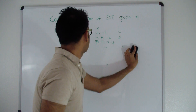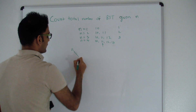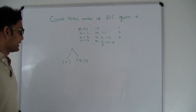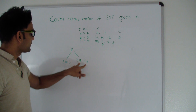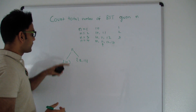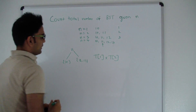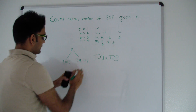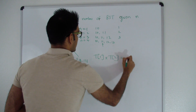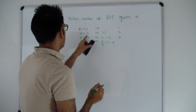When 11 is the root, 12 and 13 go on the right side and 10 goes on the left side. We already know the number of trees for 2 elements is T(2)=2, and for 1 element is T(1)=1. The total number of trees with 11 as root is T(1) × T(2) = 1 × 2 = 2.